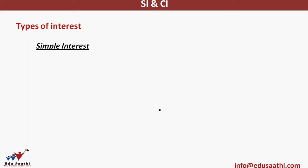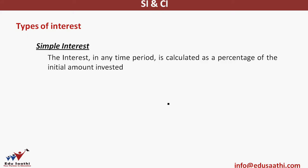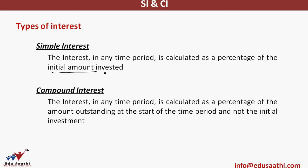In simple interest, the interest in any time period is calculated as a percentage of the initial amount — the initial amount invested. Whatever your initial investment, over the years your interest will always be calculated on that initial investment. In compound interest, the interest in any time period is calculated as a percentage of the amount outstanding at the start of the time period. That is the key difference between simple and compound interest.